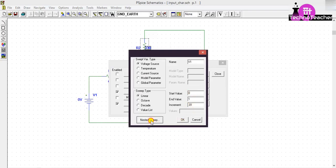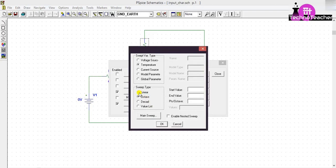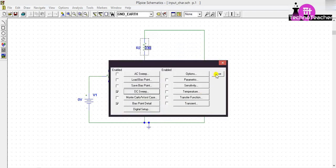Then click on nested sweep. Select linear and this voltage source. The name of the second voltage source is V2. Then give the start value 0, or you can give here 1, and end value 21, and increment suppose 5. Then check on enable nested sweep, then press OK, close it.